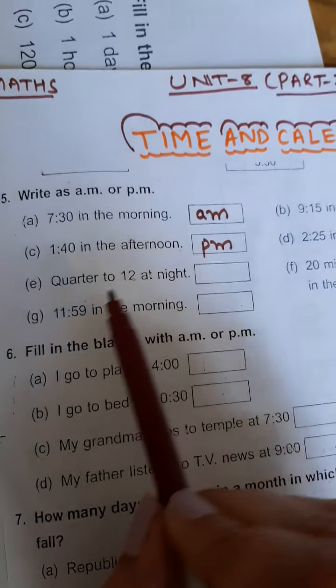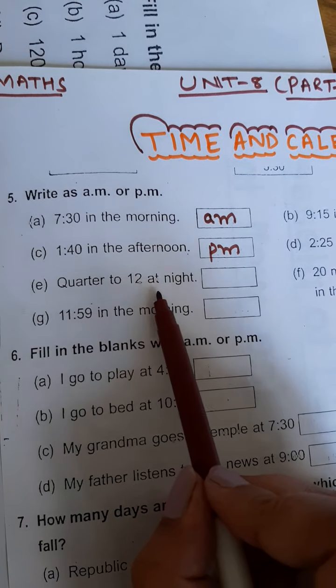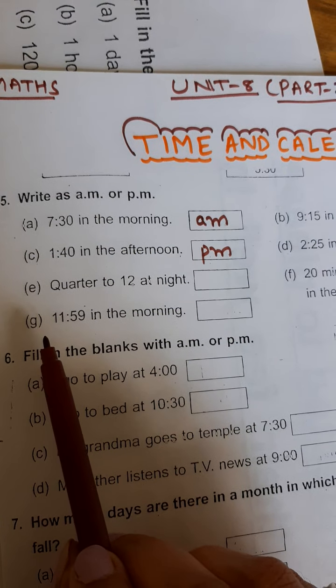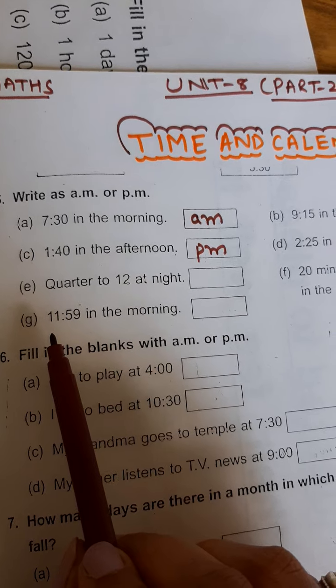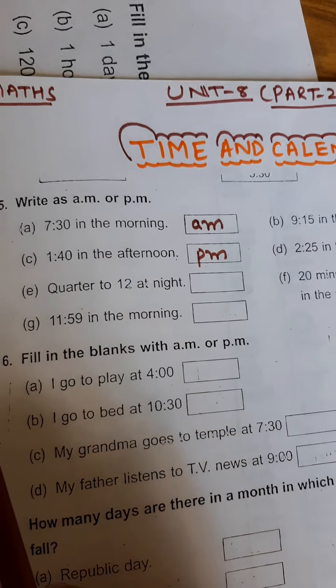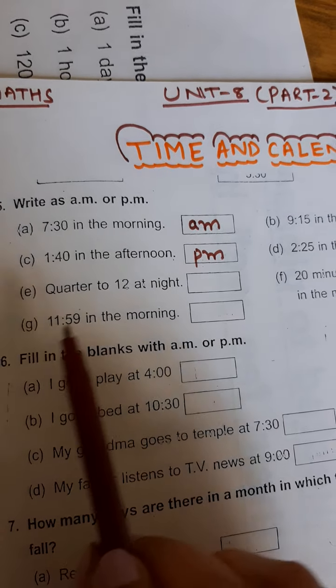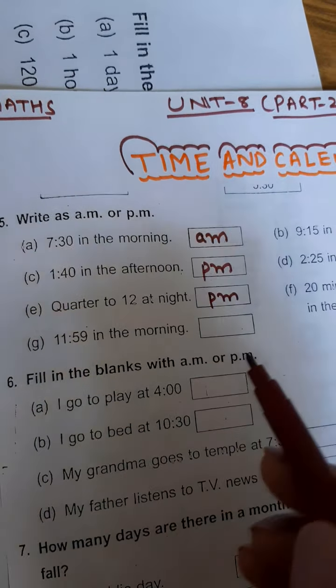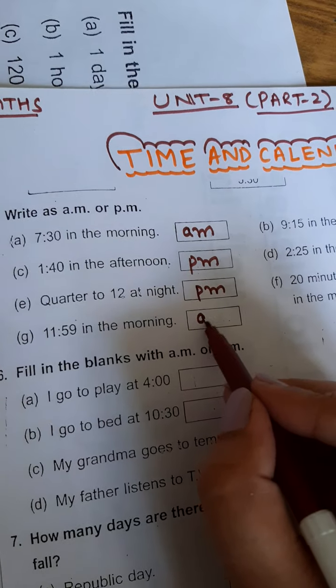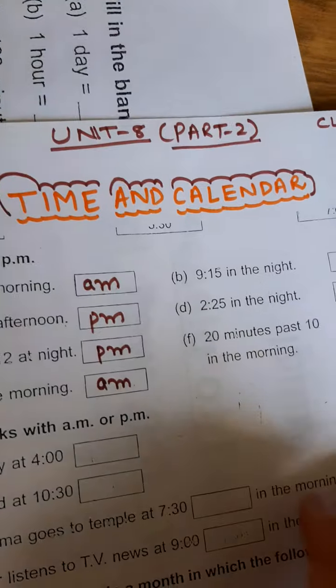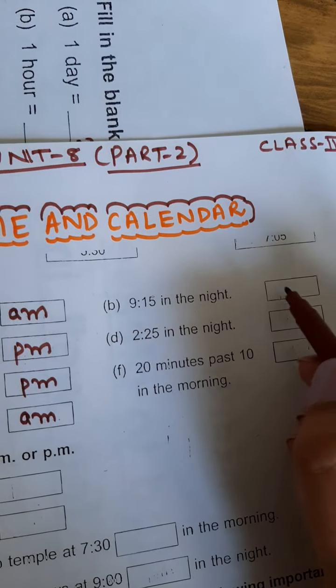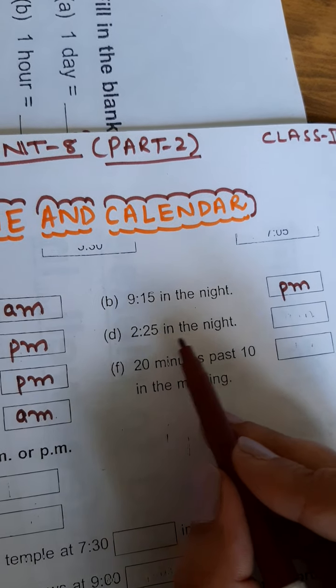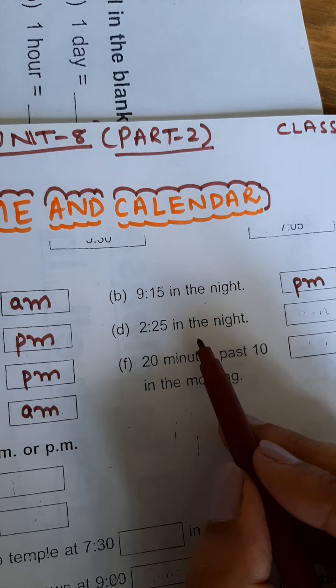Quarter to 12 at night - the time is between 12 noon to 12 midnight, so we will write PM here. 11:59 in the morning - so AM. 9:15 in the night - so we will write PM. 12:25 in the night - students, you have to pay attention.